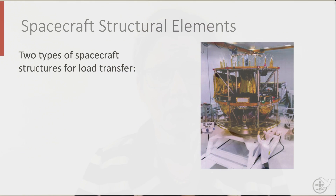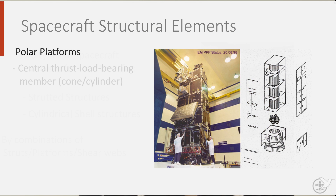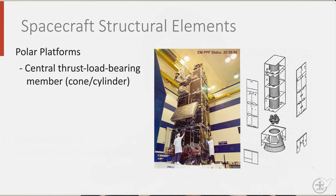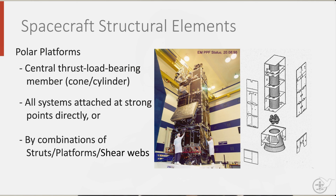If you look at spacecraft, which form the payload that is carried up into space by the launcher, they typically have one of two types of structures used to transfer loads. Strutted structures are often three-dimensional trusses optimized for carrying loads. Or cylindrical cell structures, also known as polar platforms. Polar platforms are characterized by a central load-bearing member, such as a cone or a cylinder. All loads from the launch vehicle are transferred through this cylinder, and all systems within the spacecraft — such as the measuring equipment — are attached to this cylinder, either directly at strong points, or by means of struts, platforms, and shear webs.